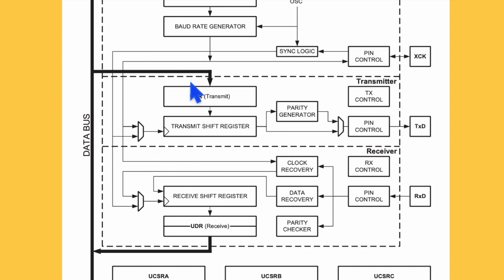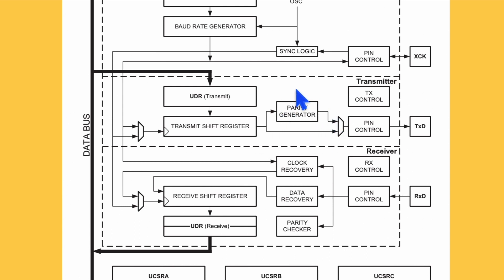For the transmitter, we first write data into the transmit data register. Once data is written there, it is moved to the transmit shift register if the shift register is empty. In the shift register, parity is added if selected — if parity is disabled, data is transmitted directly over the TX line. If parity is selected, it is added and then transmitted. The start and stop bits are also added at this stage.